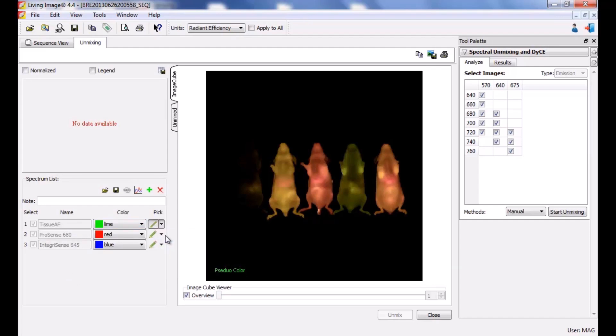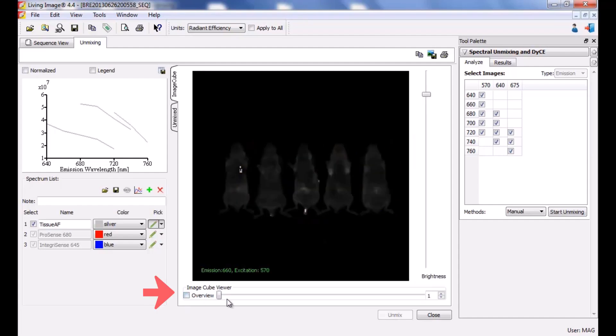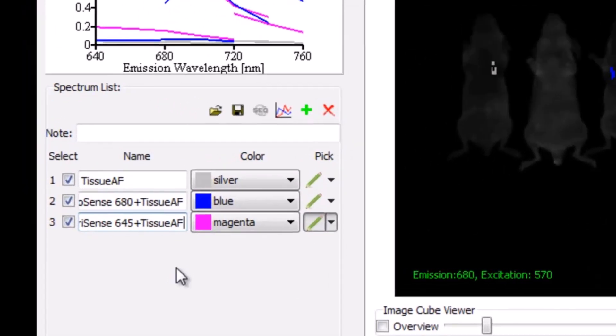To begin, select the first pen tool next to the tissue autofluorescence component. Draw on top of the image over the mammary fat pad. If visualization is difficult, deselect overview, adjust the brightness, and scroll through the different filter pair images. Repeat these steps with the other two components. Find the location on the image where each probe is emitting light and draw over the light emission using the pen tool. The remaining two components actually represent the probe plus tissue autofluorescence.